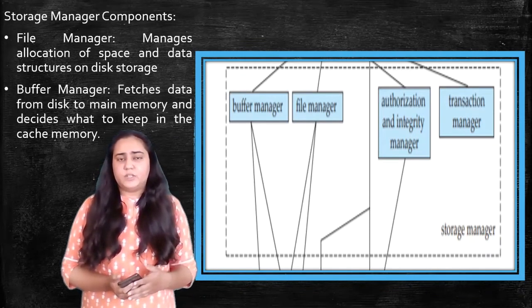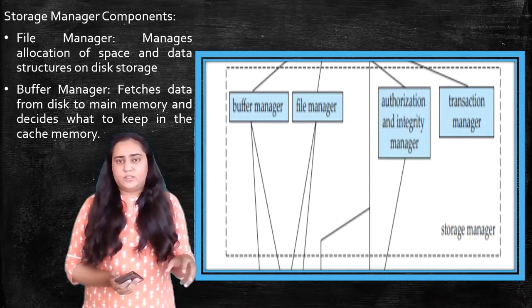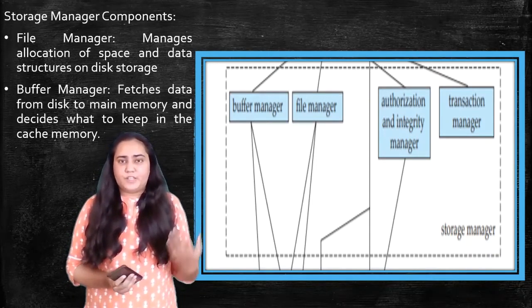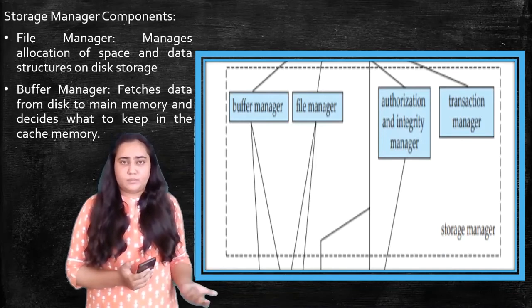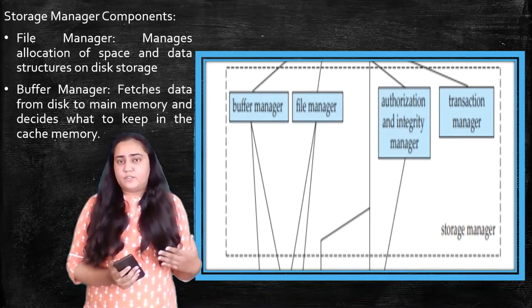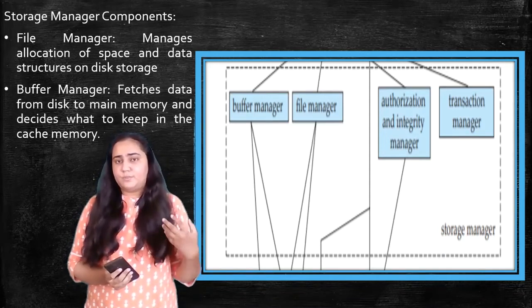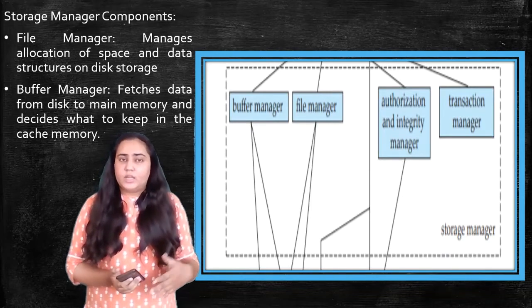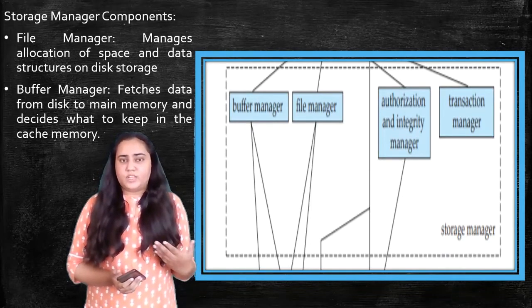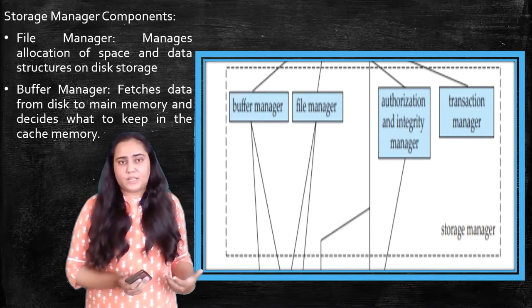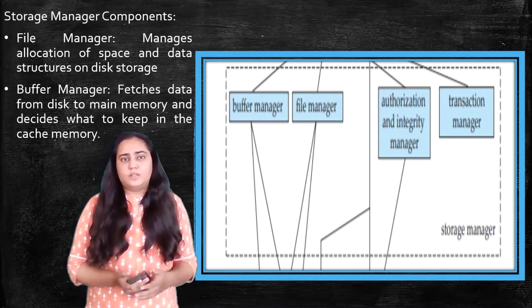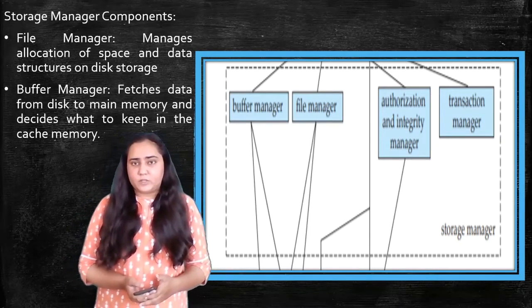So the buffer manager does all these jobs. It fetches the data from secondary to main memory, it fetches data from main memory and puts back into the secondary memory, it also decides what type of data is important and what to keep in the cache. All these things are done by buffer manager.